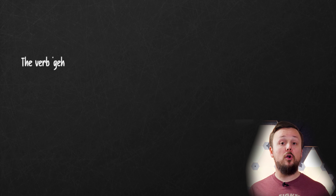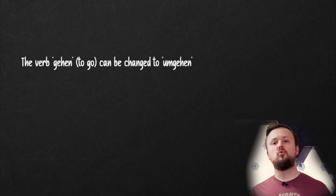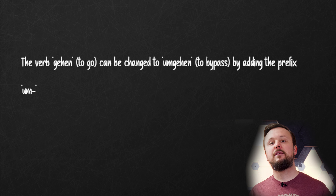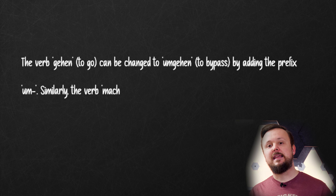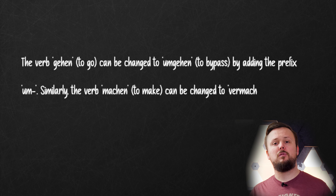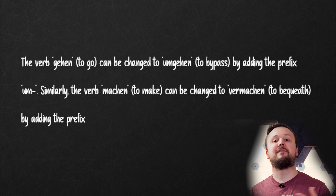Verbs in German also have a variety of prefixes and suffixes that can change the meaning of the verb. For example, the verb gehen (to go) can be changed to umgehen (to bypass) by adding the prefix um. Similarly, the verb machen (to make) can be changed to vermachen (to bequeath) by adding the prefix ver.